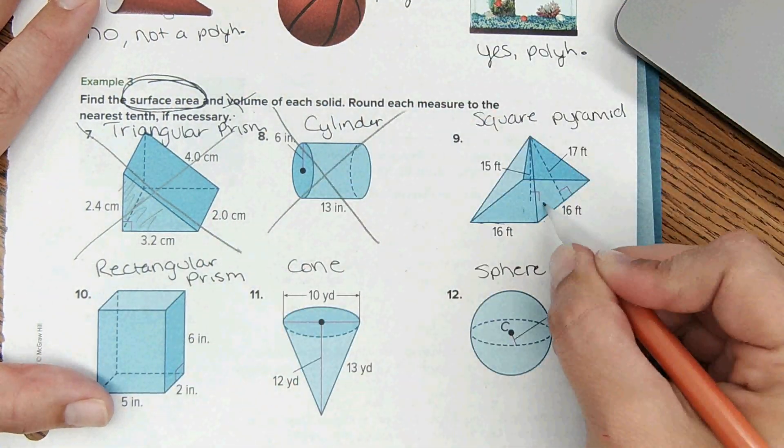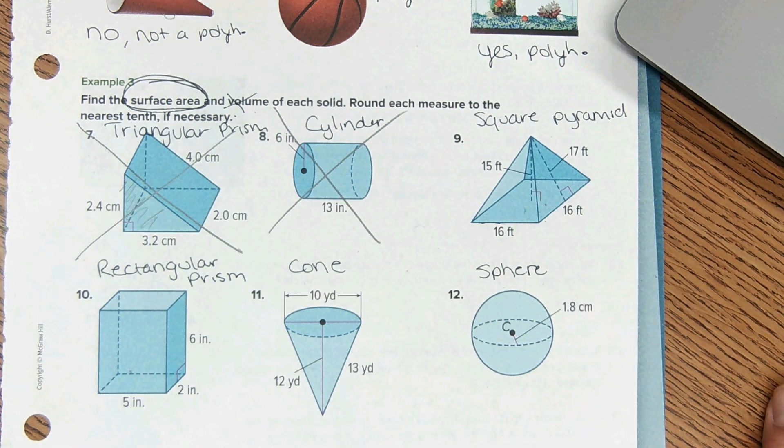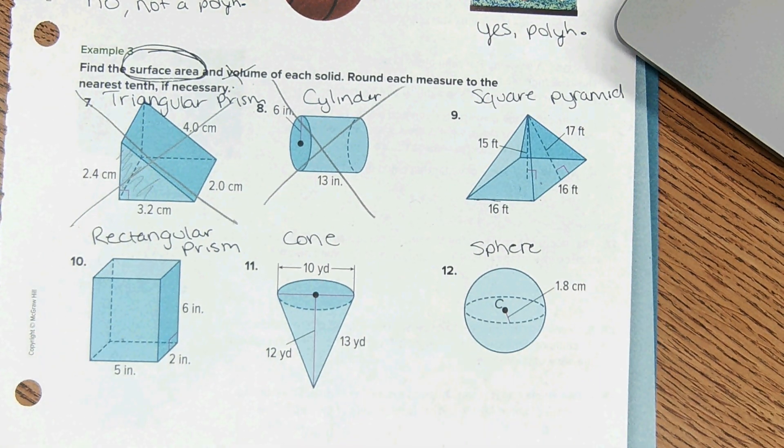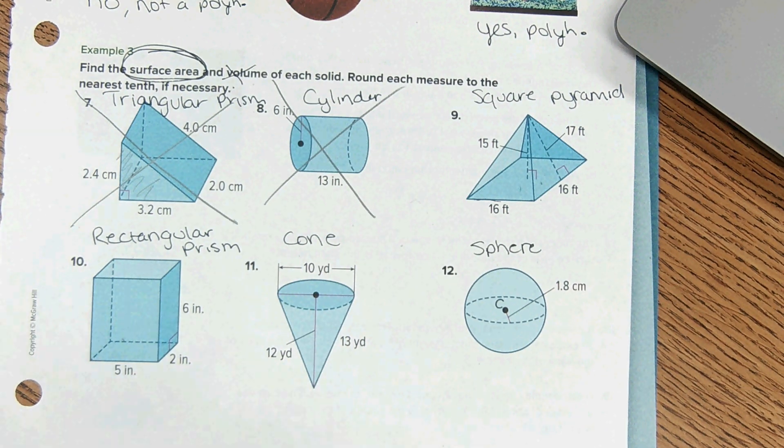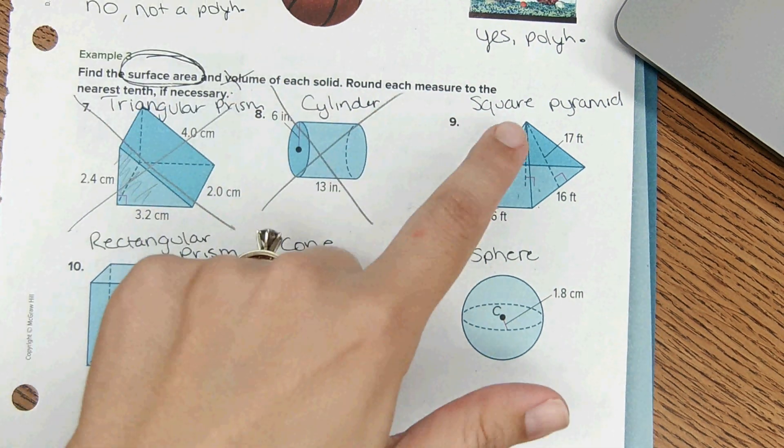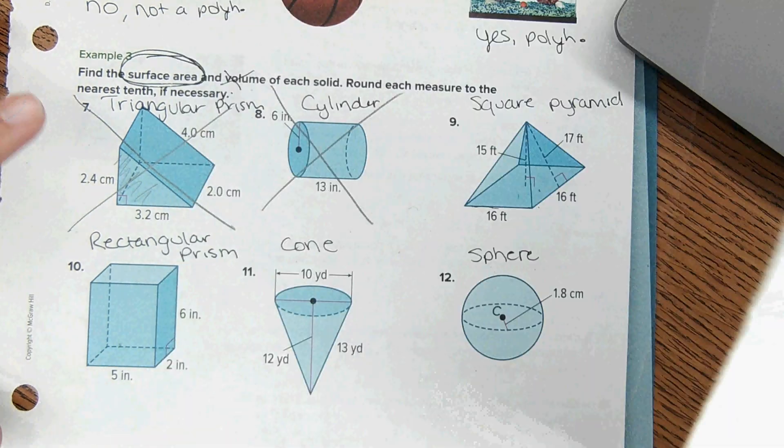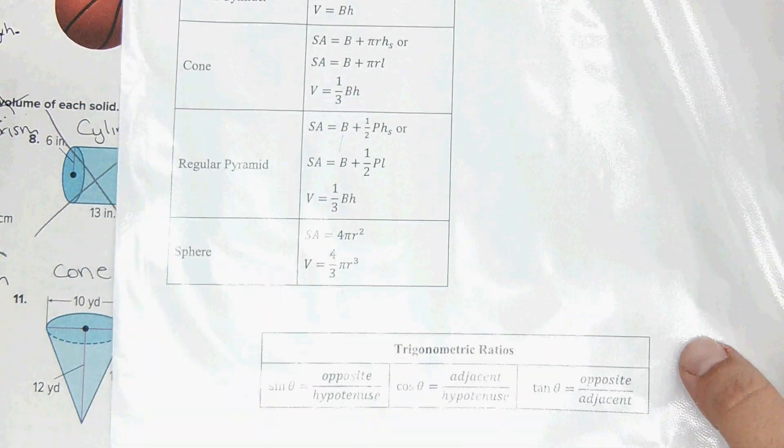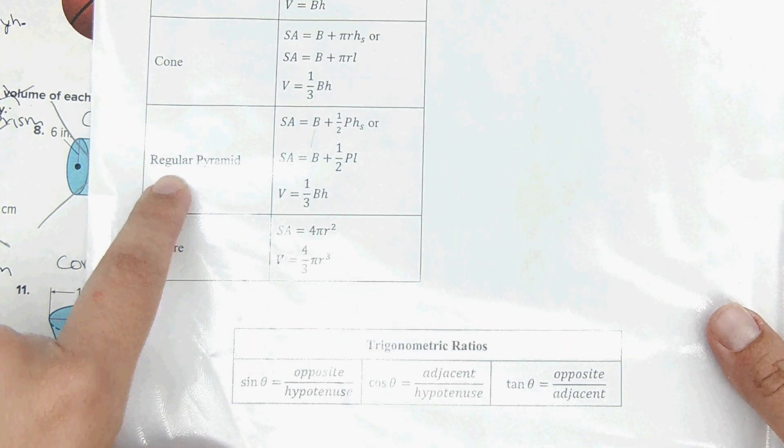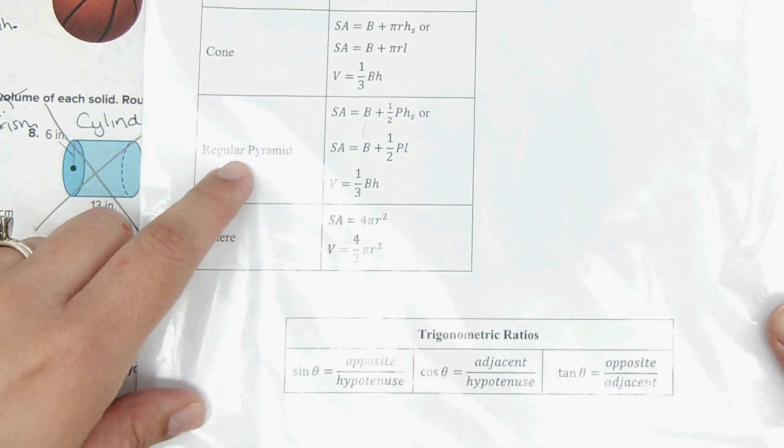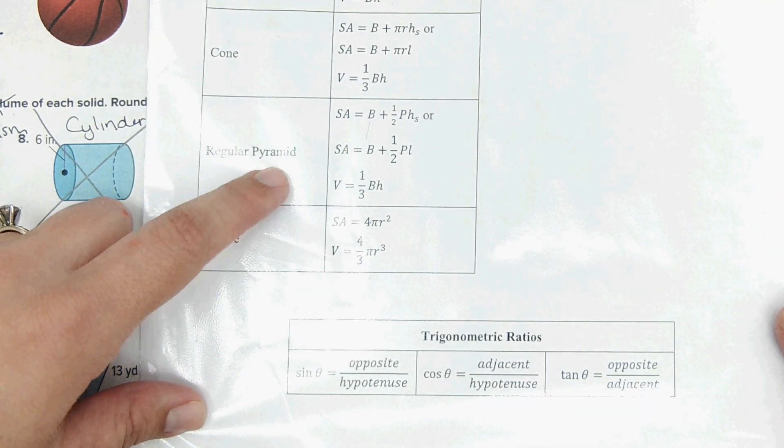So because we're just kind of brushing over it, we're going to cross out seven and eight so we can just focus on these four and not just have too much information in our minds. So we're going to cross out these two and just focus on these four. Once you've identified the shape, which we did, then you can use the reference sheet to grab the equation.